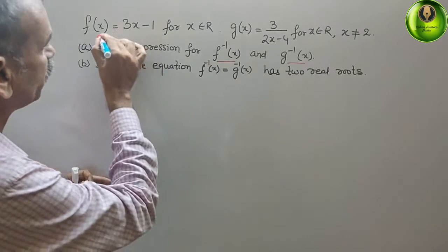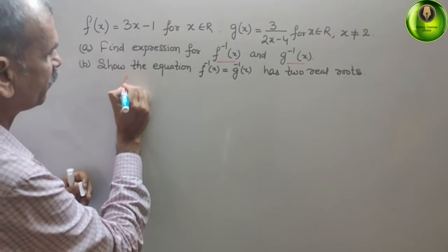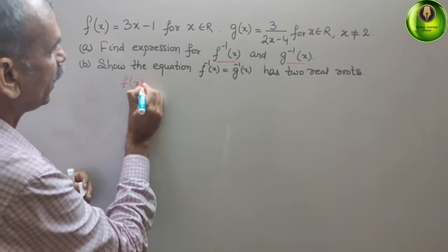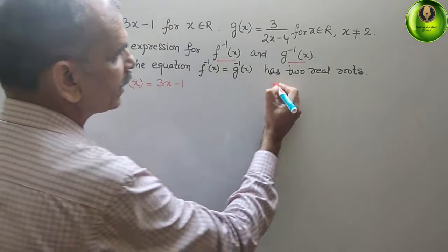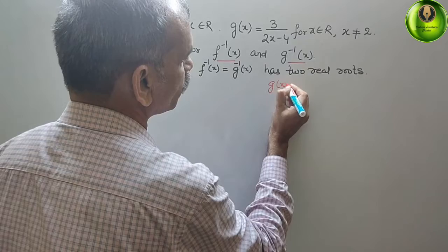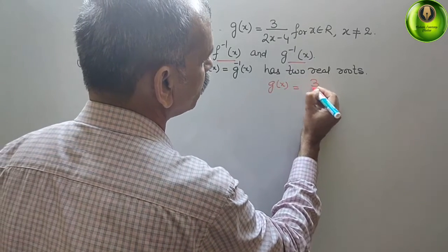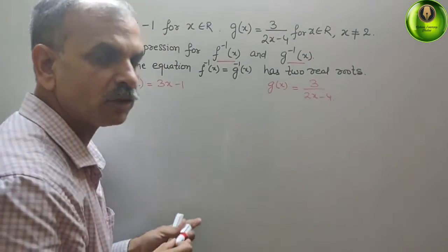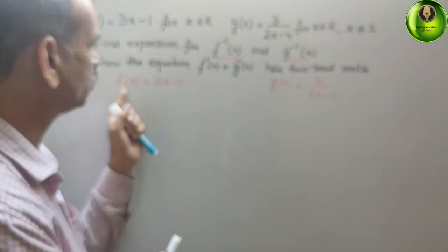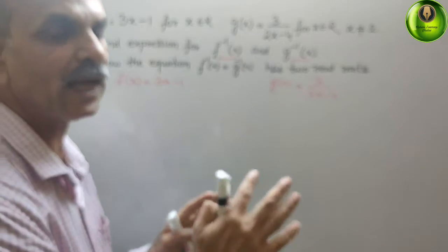Now they have given f(x) equals 3x minus 1 and g(x) equals 3 by 2x minus 4. So for f inverse, what we have to do is take f(x) as y.